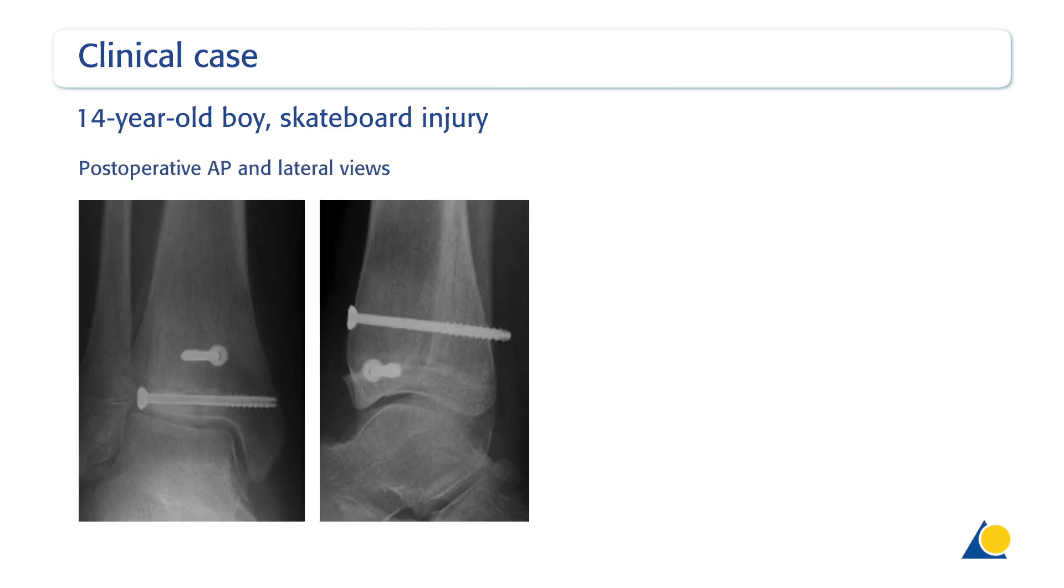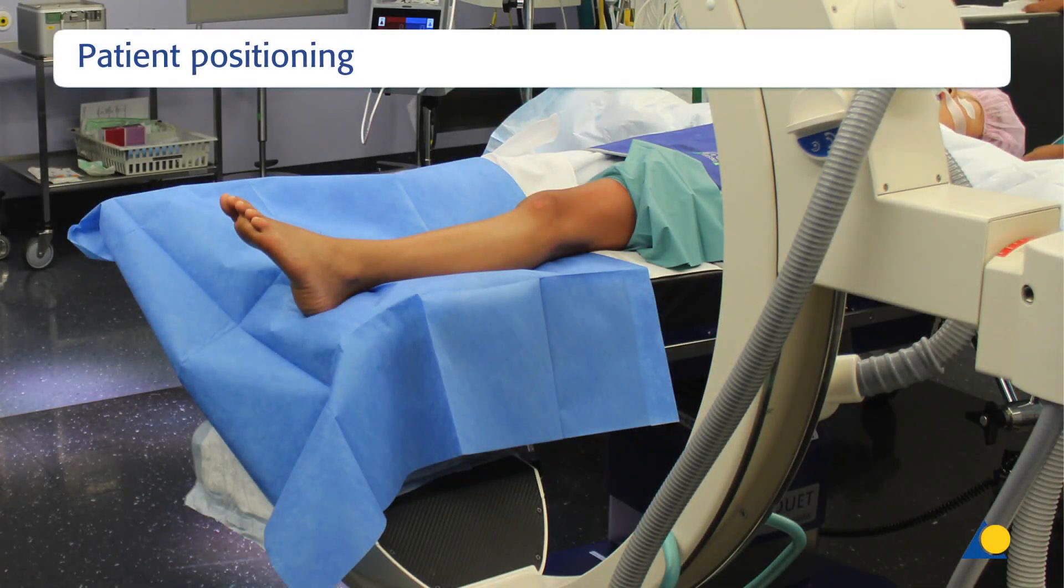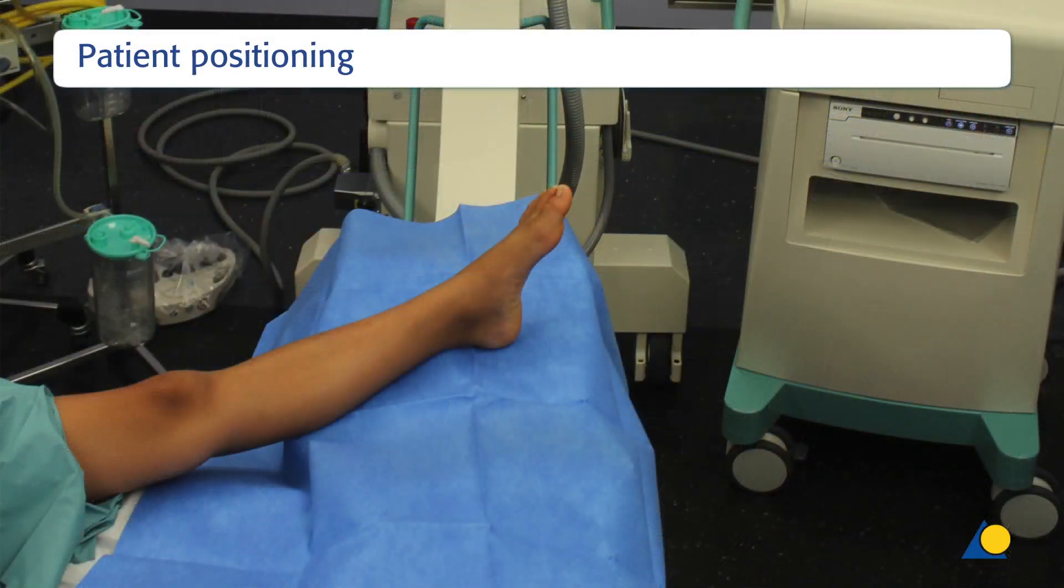In this case, a transcutaneous cannulated screw fixation was performed under general anaesthesia. The patient is positioned supine on a radiolucent table. Alternatively, the sterile foot can be positioned directly on the camera of the image intensifier. This positioning allows for better imaging of the fracture and visualisation of the fracture planes.